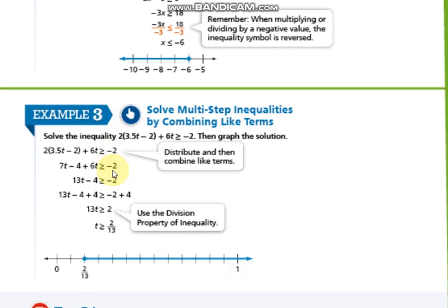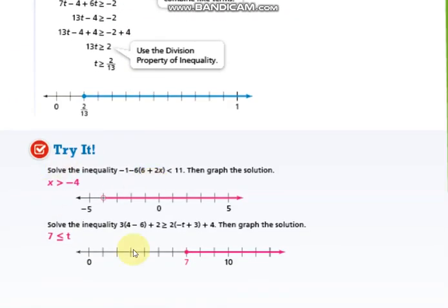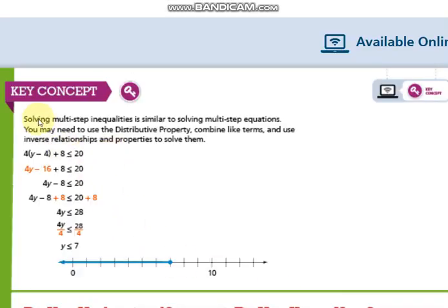Let's see this example. Here also you need to distribute, add like terms, then continue as usual. We have the try it part. You have to do it by your own. So solving multi-step inequalities is similar to solving multi-step equations. You may need to distribute, combine like terms. Then of course you are going to use inverse relationships.